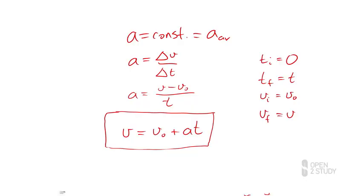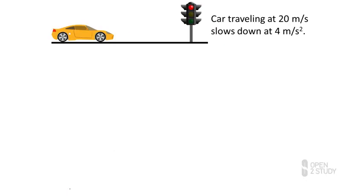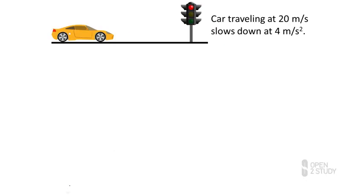We'll try an example where you're in your car, moving along at 20 metres per second — that's about 72 kilometres an hour — and you approach a red traffic light and want to slow down and stop.